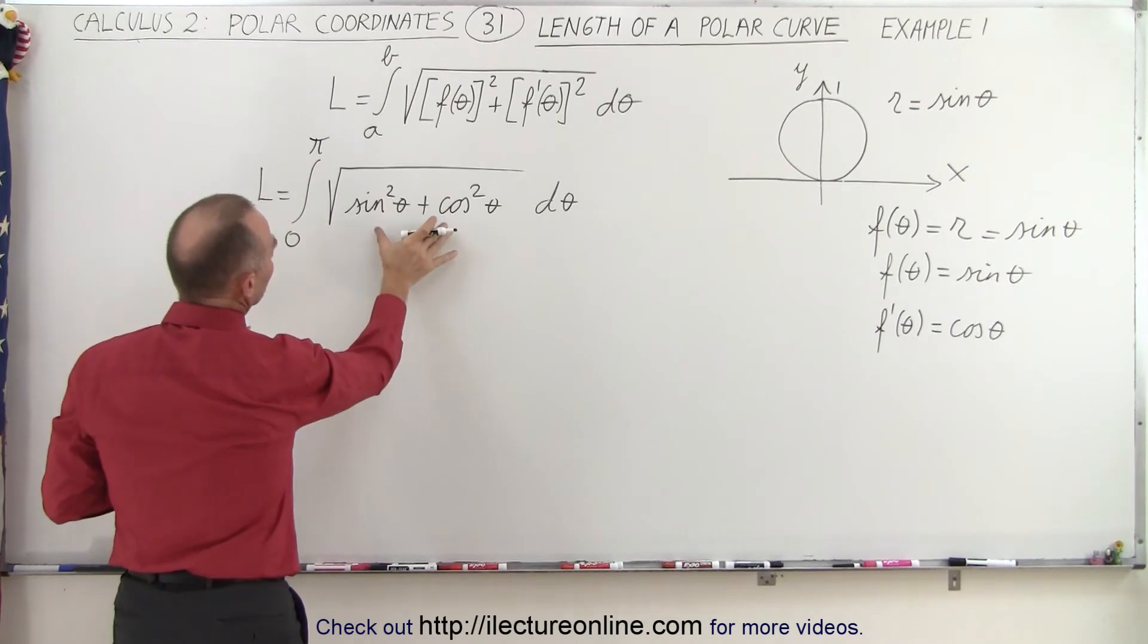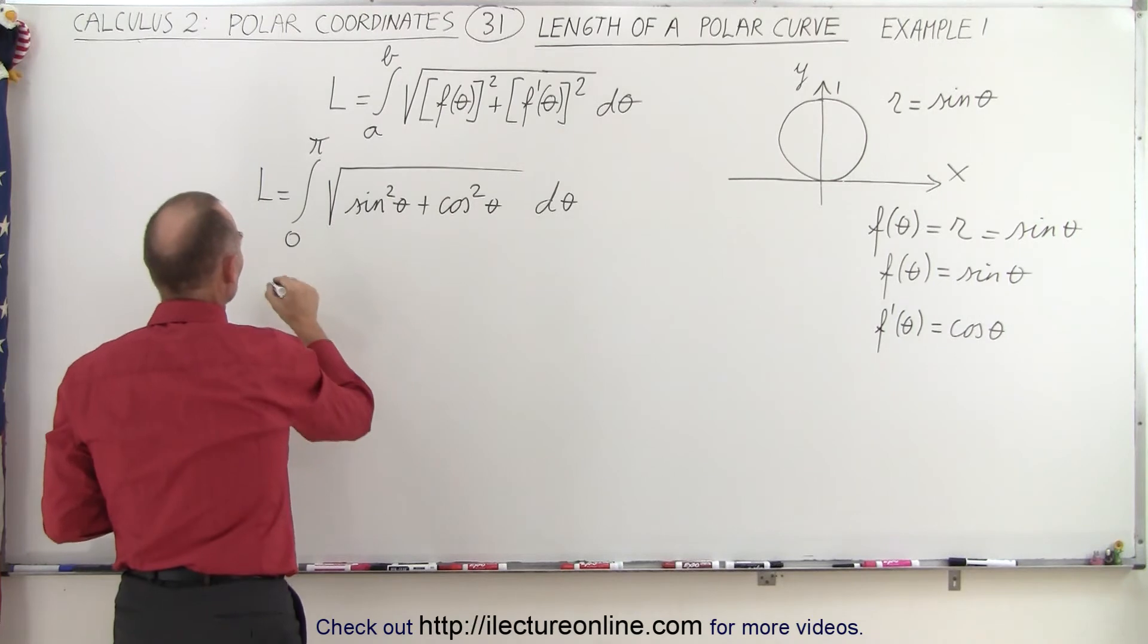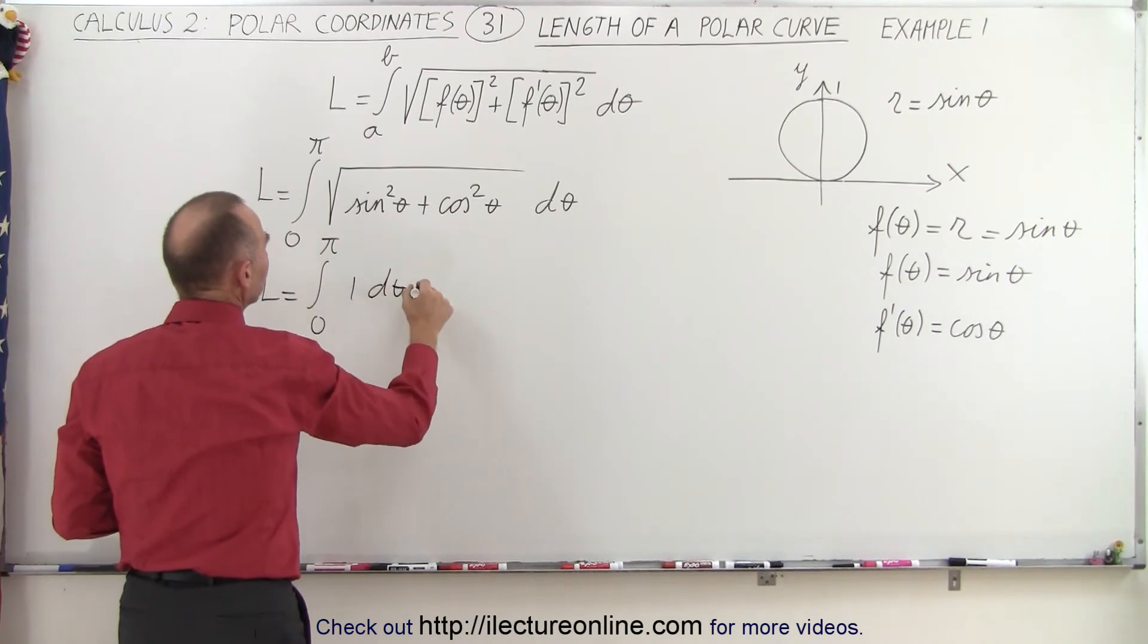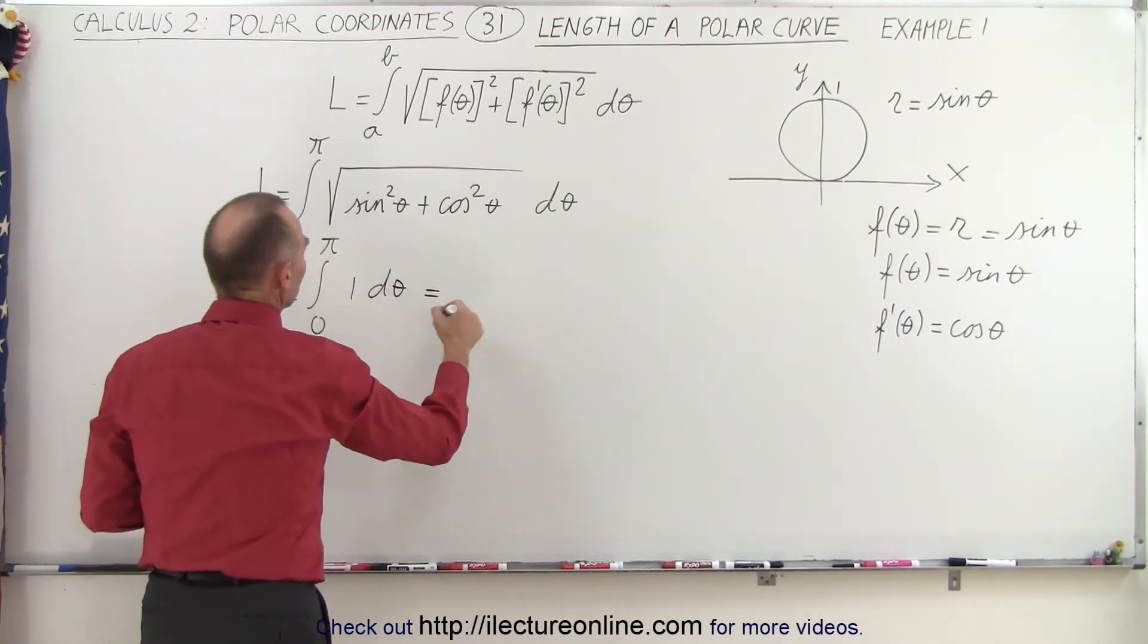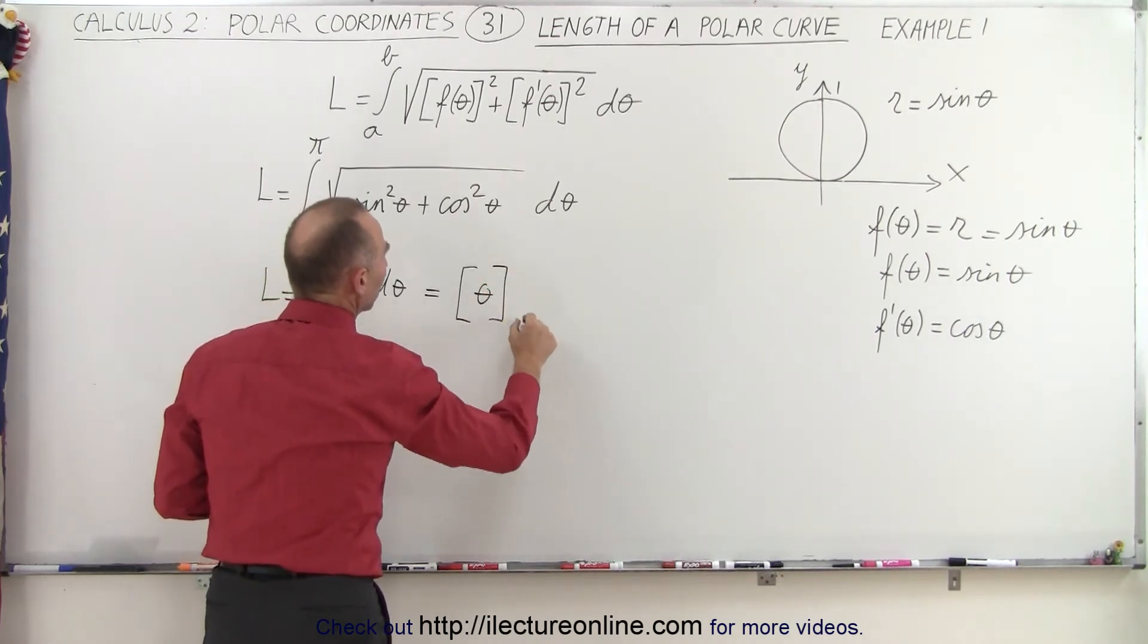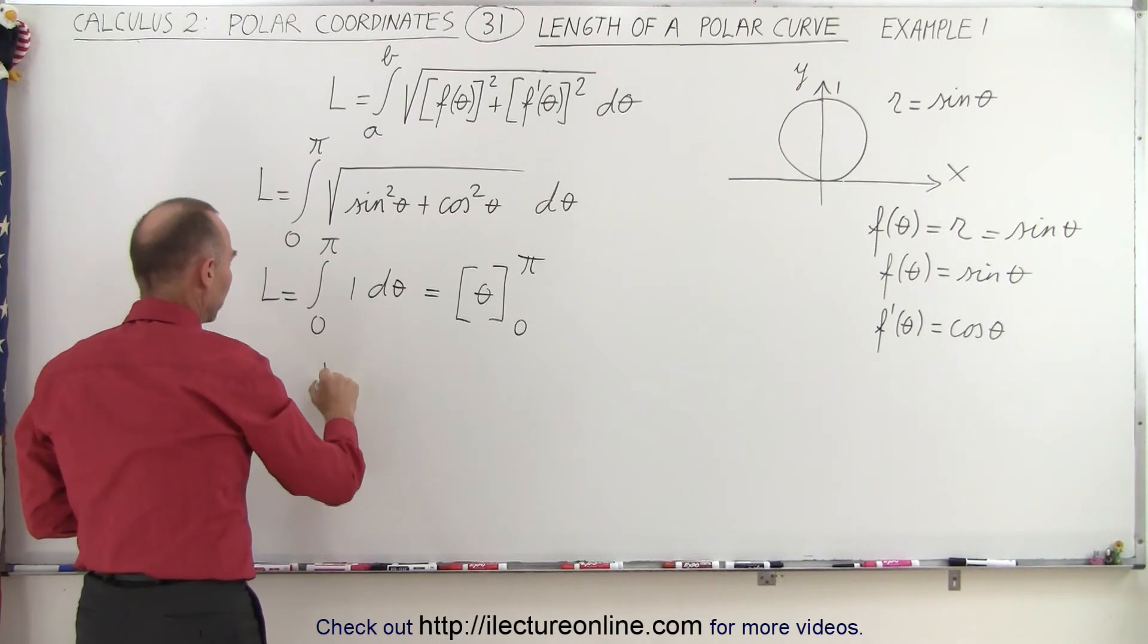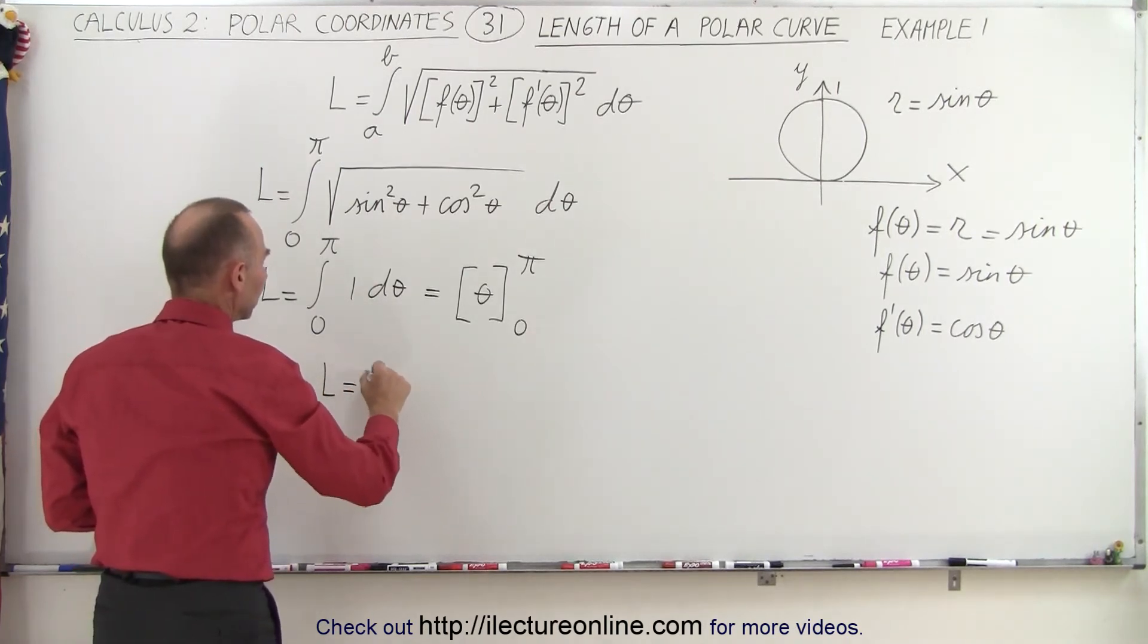And of course, we know that the sine square of theta plus the cosine square of theta is equal to one. The square root of one is equal to one. So we have L is equal to the integral from zero to pi of one times d theta, which is equal to theta from zero to pi. Plug in the lower limit, we get zero. Plug in the upper limit, we get L is equal to pi.